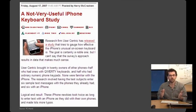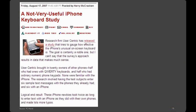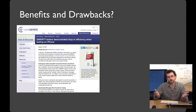Here's an example of a study that came out right when the iPhone was released, done by a research firm called User Centric. The firm released a study trying to gauge how effective the iPhone's unusual on-screen keyboard is. They brought in 20 owners of other phones — half with QWERTY keyboards, half with ordinary numeric keypads — none familiar with the iPhone. The subjects entered six sample text messages with their own phones and six with the iPhone. I cannot say the survey's approach results in data that makes much sense. So let's critique this study and talk about its benefits and drawbacks.